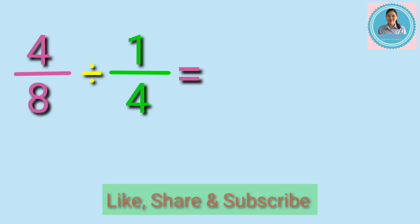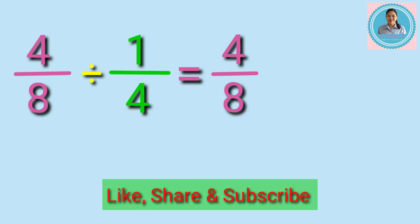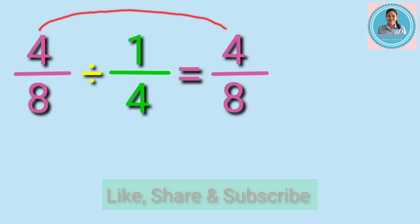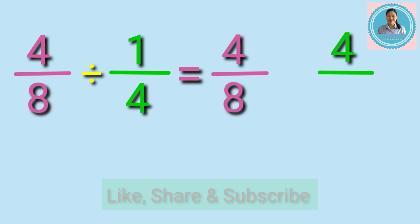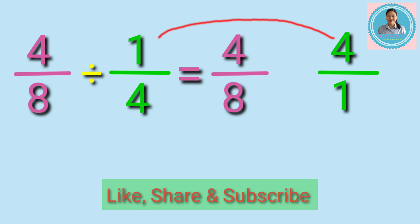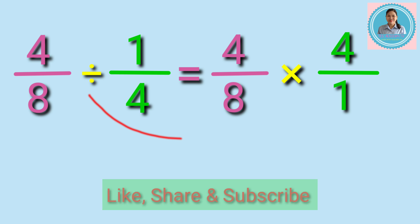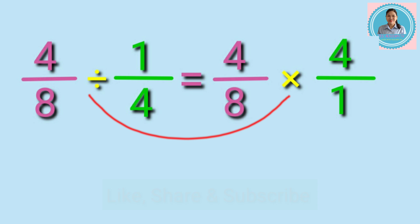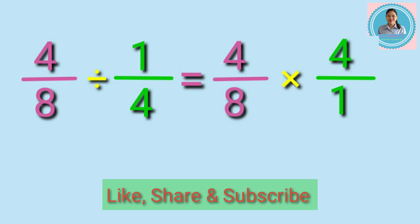Okay, let's answer. Copy first the dividend four eighths, and then get the reciprocal of the divisor one fourth, which is four over one, and change the division sign to multiplication sign.